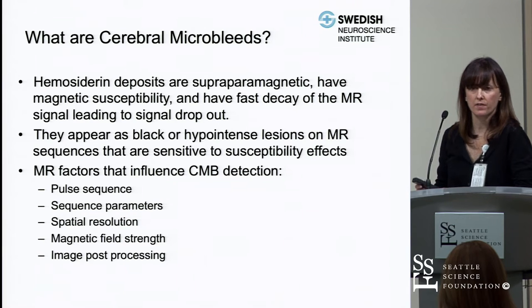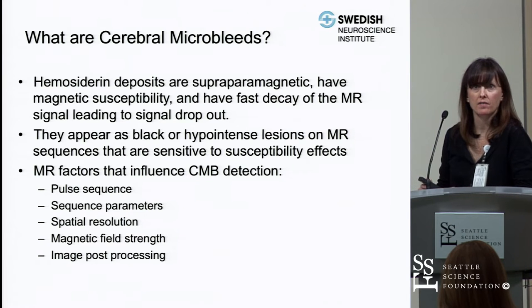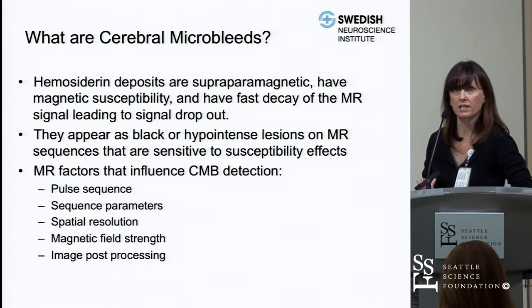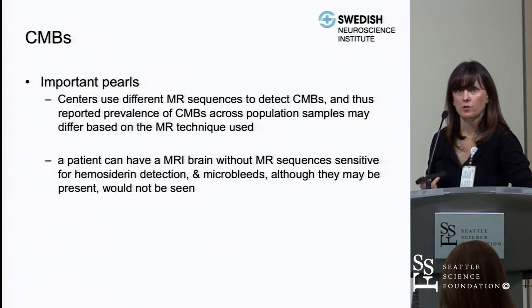Things that influence cerebral microbleed detection include the pulse sequence used on the MRI, the sequence parameters, the spatial resolution, the magnetic field strength, and the post-imaging processing. Different centers use different MR sequences to detect microbleeds.